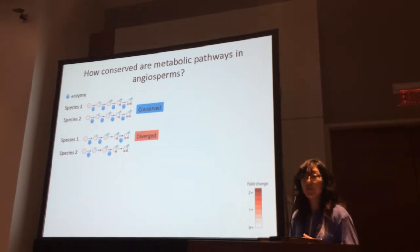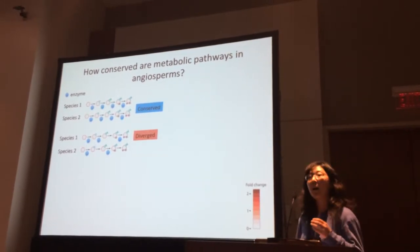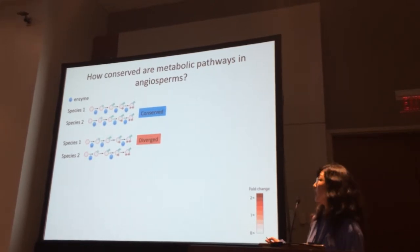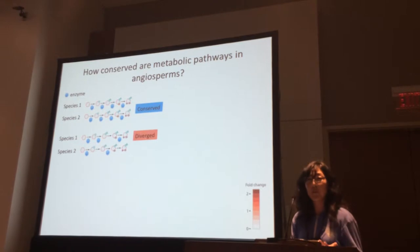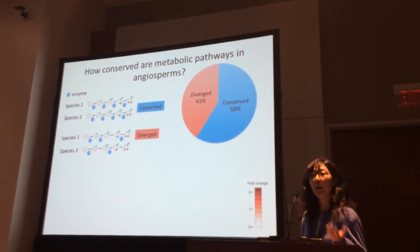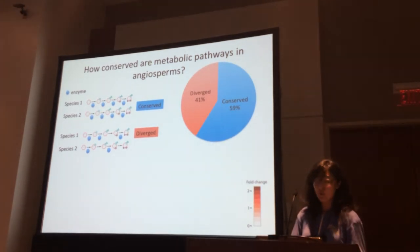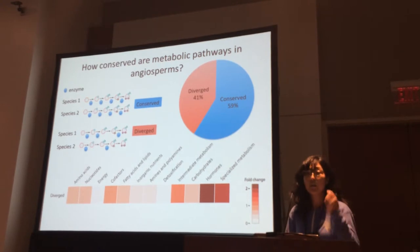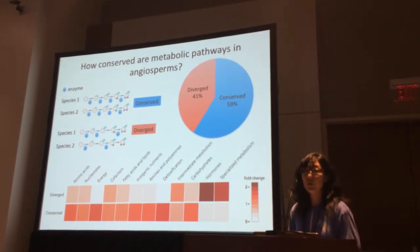One of the first questions we asked was how conserved are these metabolic pathways in flowering plants. A conserved pathway is one where the same reactions are annotated with enzymes between two species; a diverged pathway has different reactions annotated with enzymes between species. We found about 60 percent of pathways found in at least two angiosperm species to be conserved in all their reaction annotations, whereas about 40 percent were diverged. Specialized metabolism and hormone metabolism were strongly enriched in diverged pathways, while many primary metabolism domains were enriched in conserved pathways.